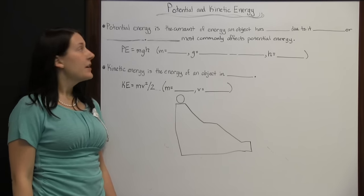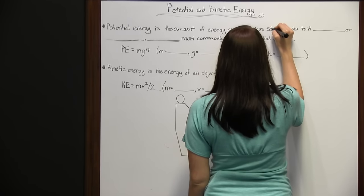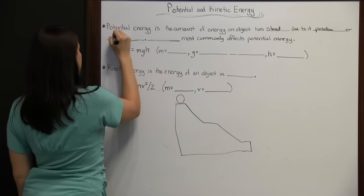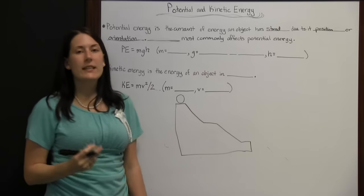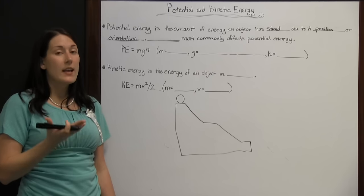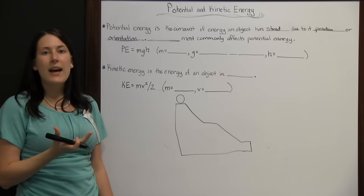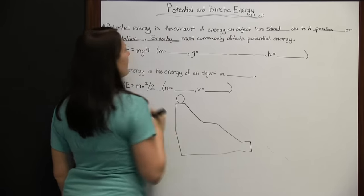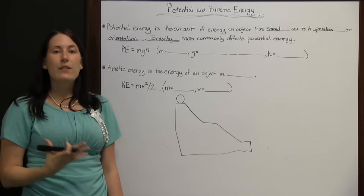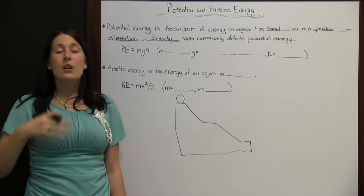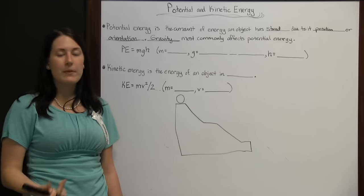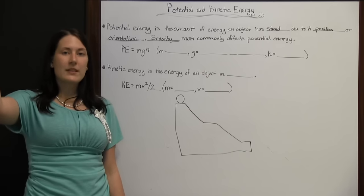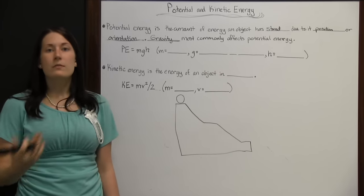Potential energy is the amount of energy an object has stored due to its position or orientation — how much energy an object has when it's sitting still; it is not in motion. Gravity most commonly affects potential energy, though mass is also a factor. If an object is positioned higher up, it's going to have more potential energy than one that's lower, because it has further to fall.